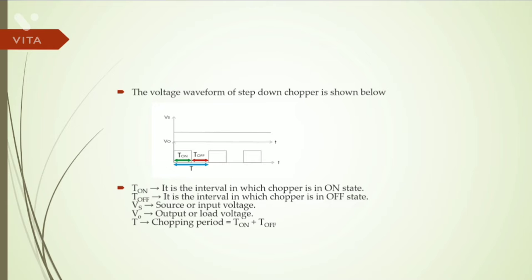These are the waveforms: supply voltage waveform and output voltage waveform. T_on is the interval in which chopper is on, T_off is the interval in which chopper is off. Vs is the source or input voltage, Vout is the output or load voltage, and T is the chopping period, equal to T_on plus T_off.